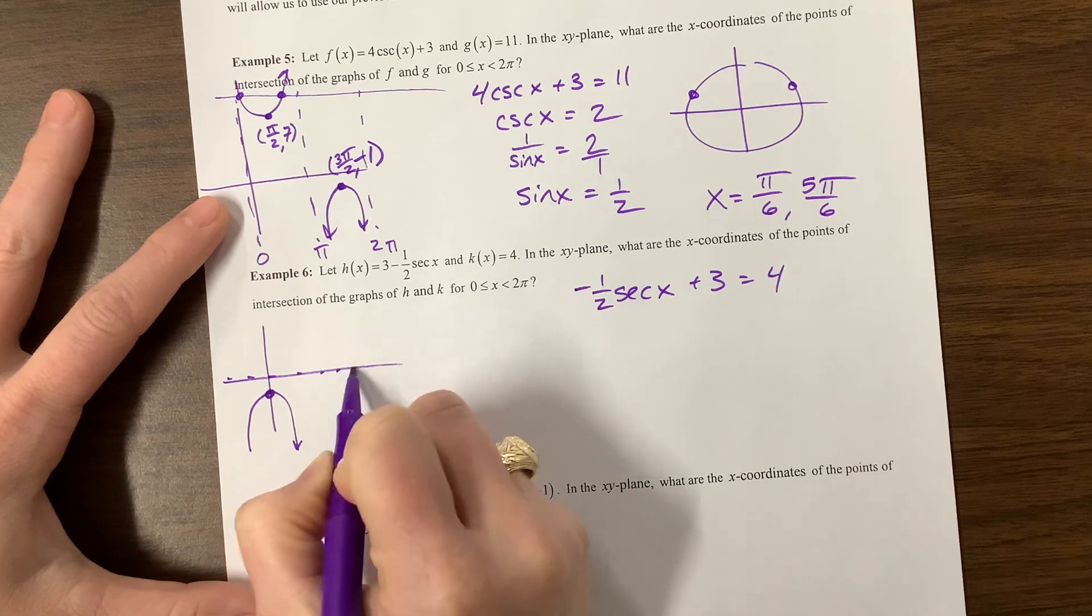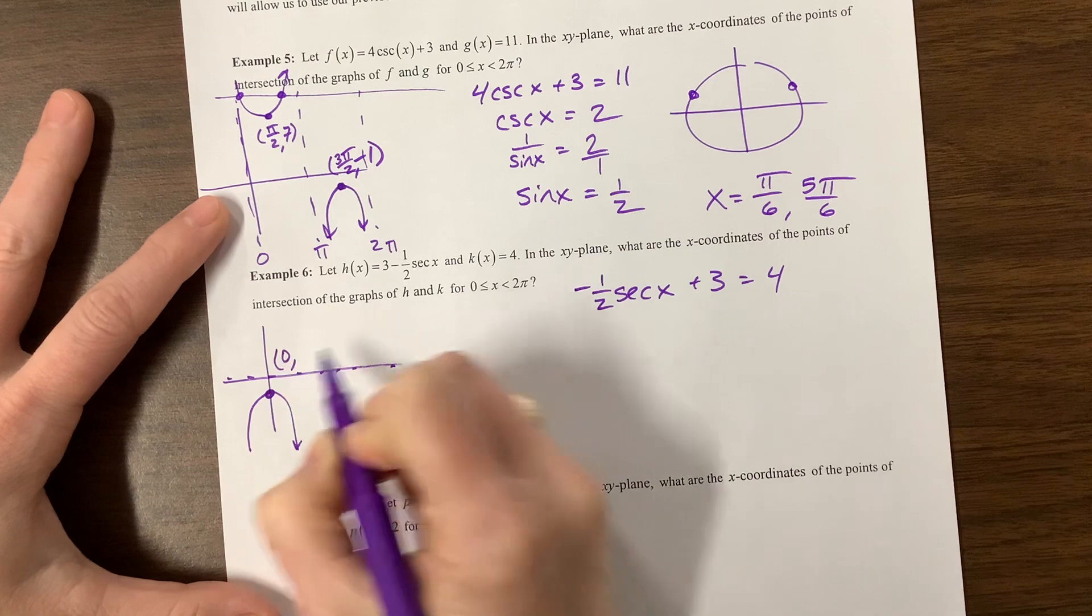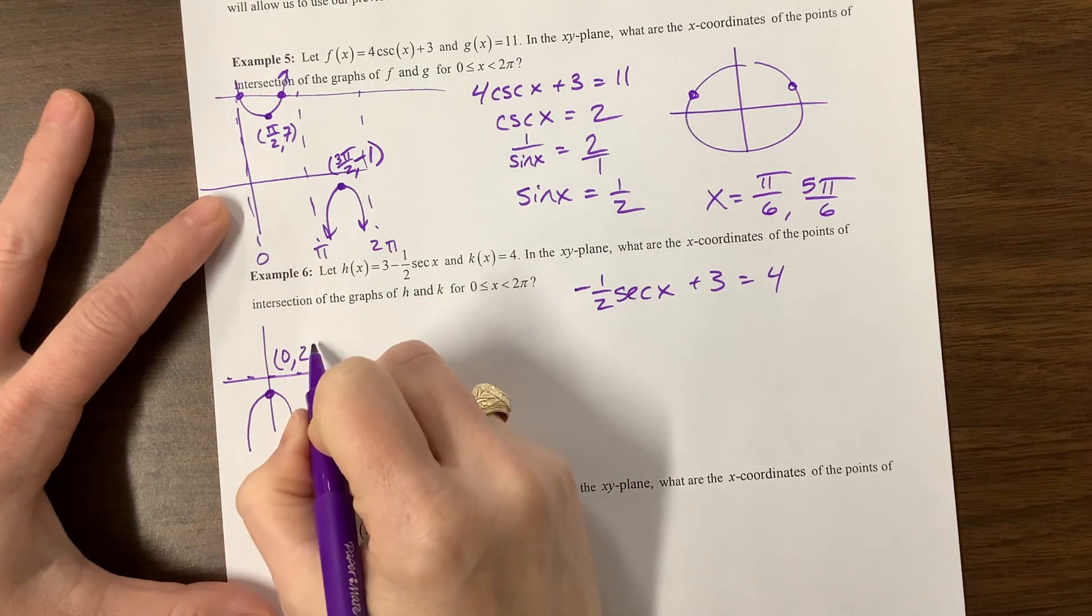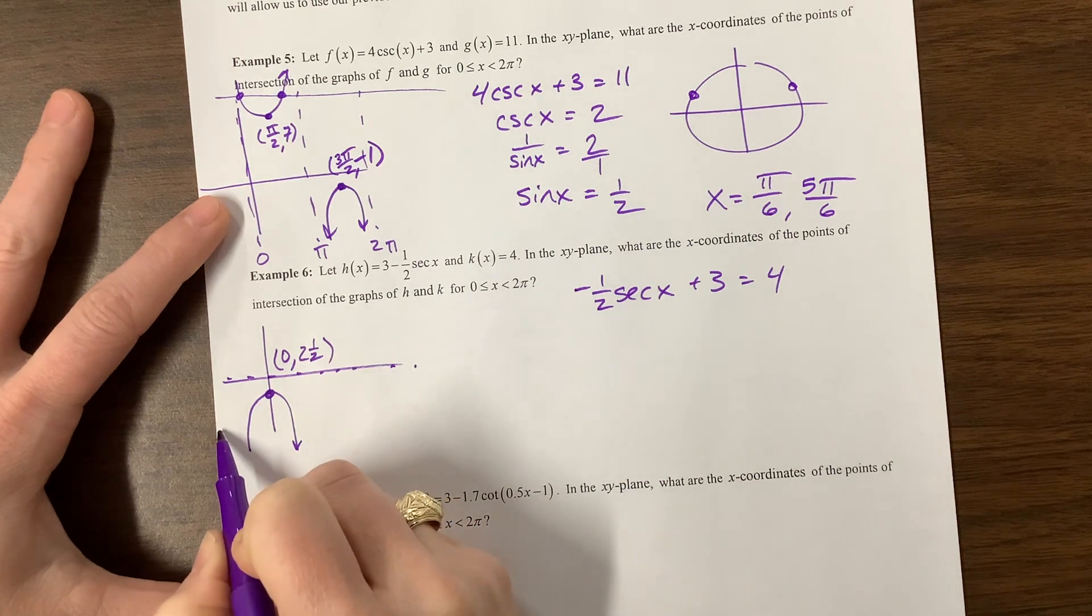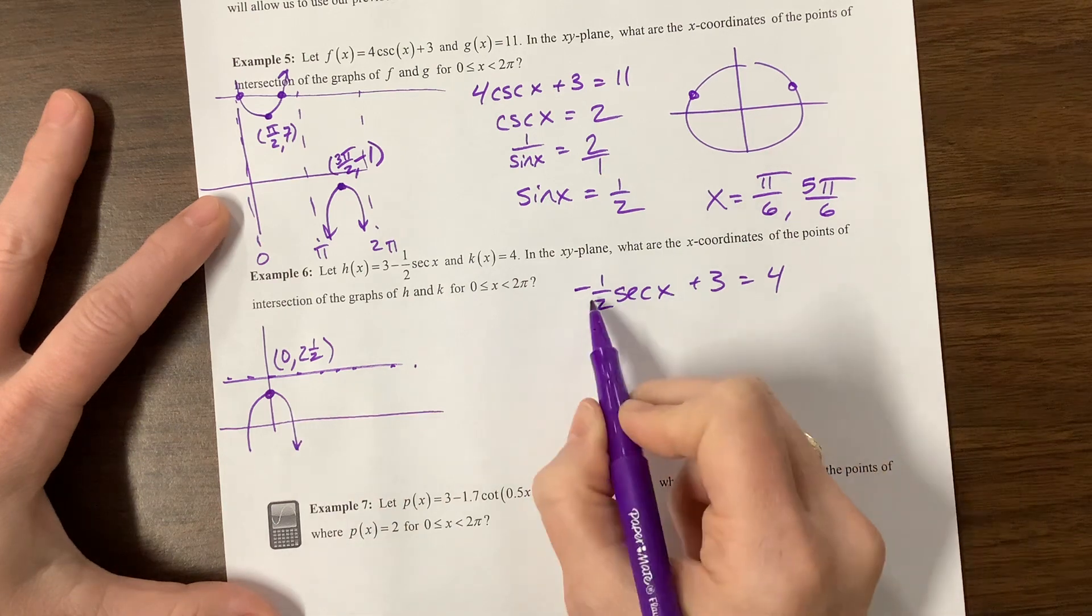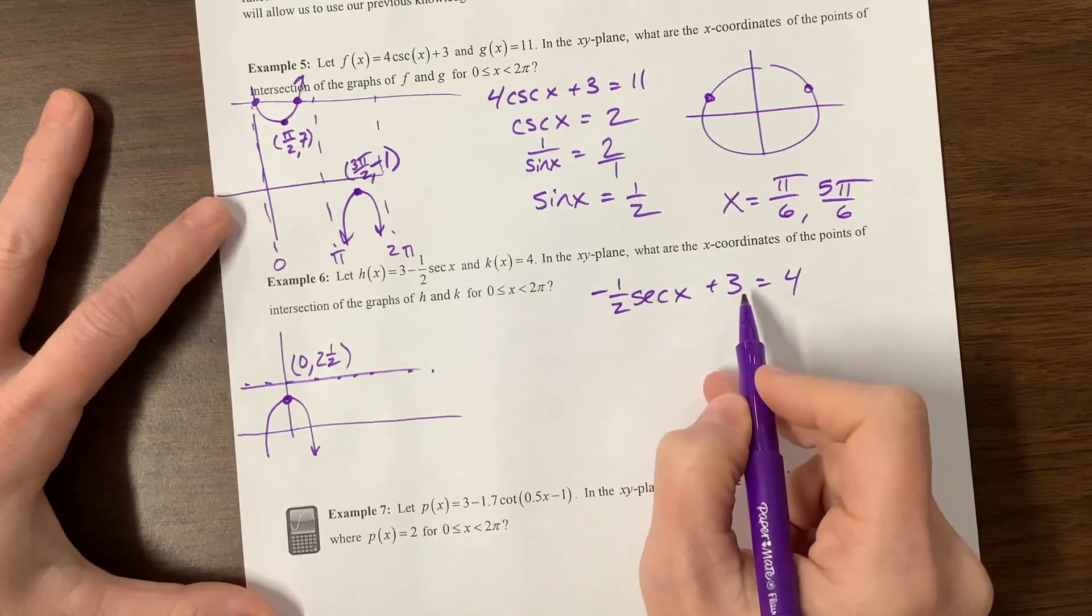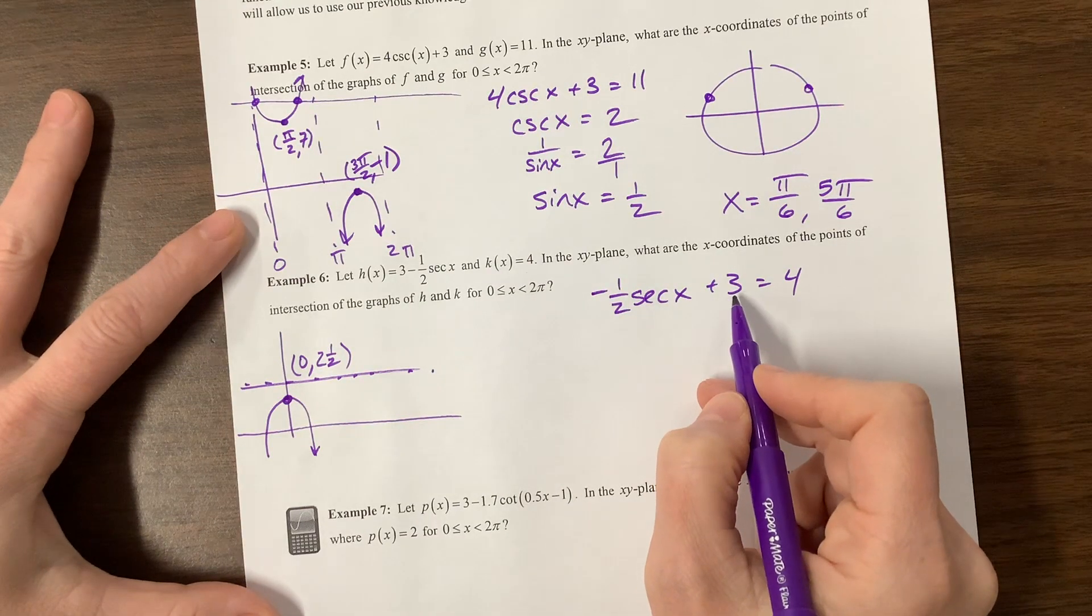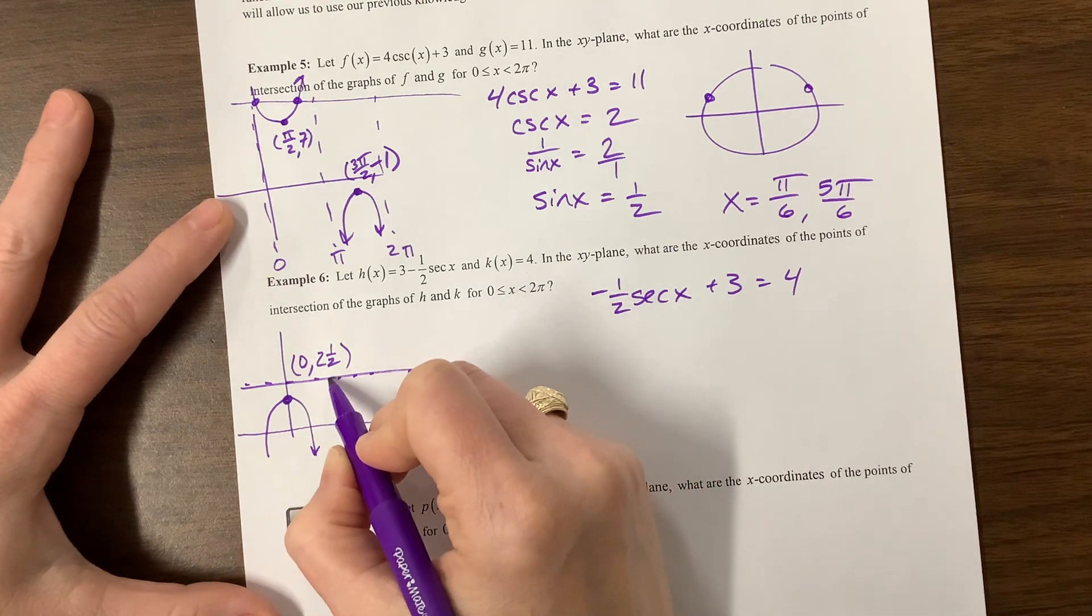Instead of being at negative 1 half, it's now going to go up 3. So, well, what if I just change? I can pretend this is my midline, and I am now at, this is now the point 0 comma 2 and a half. Here's my new, sorry, now I missed with my head.